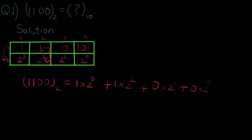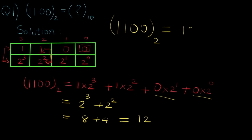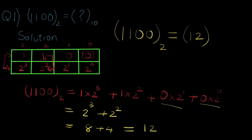The last two terms are equal to 0 so we neglect them. The answer is 2 raise to 3 plus 2 raise to 2, which is equal to 8 plus 4, which gives us the value of 12. So 1100 in binary is equal to 12 in decimal.